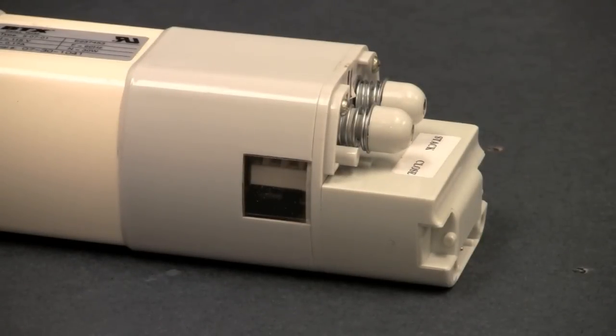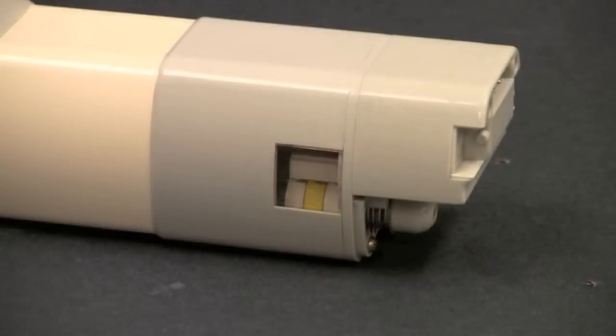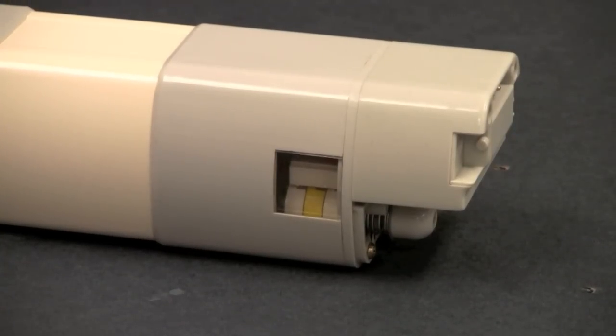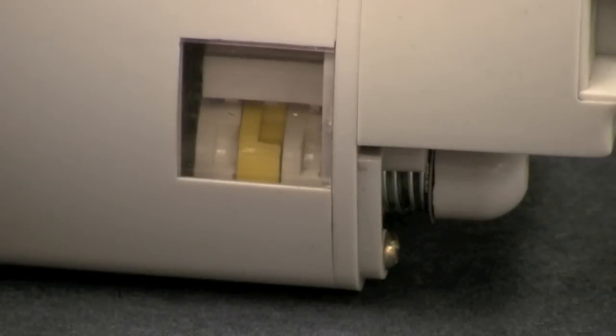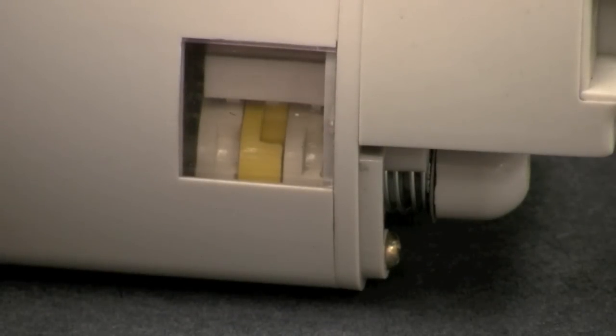On opposing sides of the motor you will see a small window. This is the limit window. Each limit knob corresponds to the window on its respective side. You can check the status of the limits by looking at the limit gears through these windows.